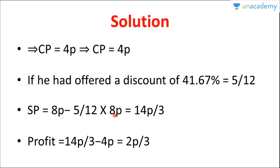The cost price will not change — it remains 4P. Only the selling price changes when different discounts are offered on the marked price. So profit = selling price − cost price = 14P/3 − 4P = 14P/3 − 12P/3 = 2P/3. The profit is 2P/3.